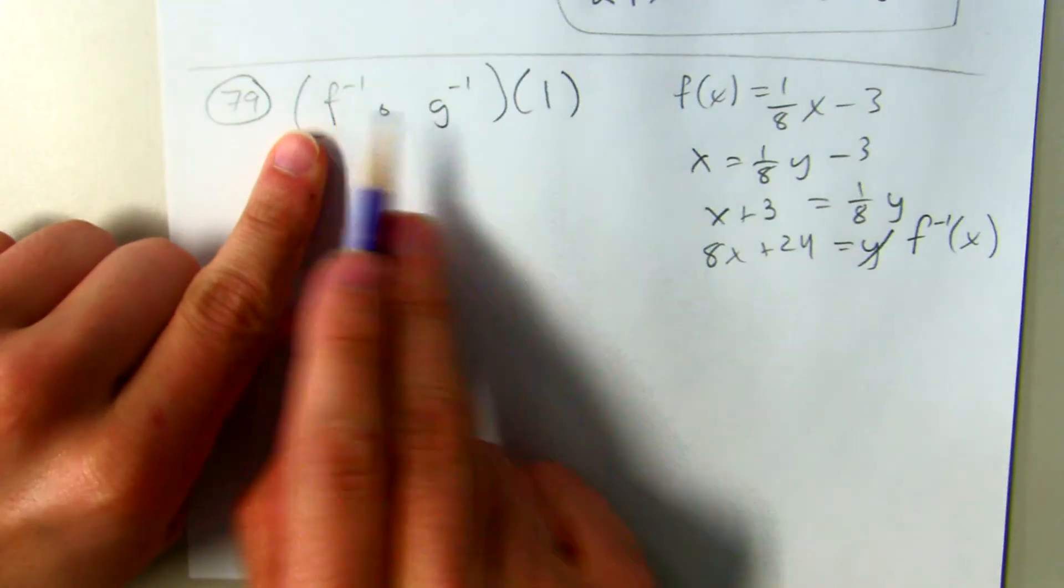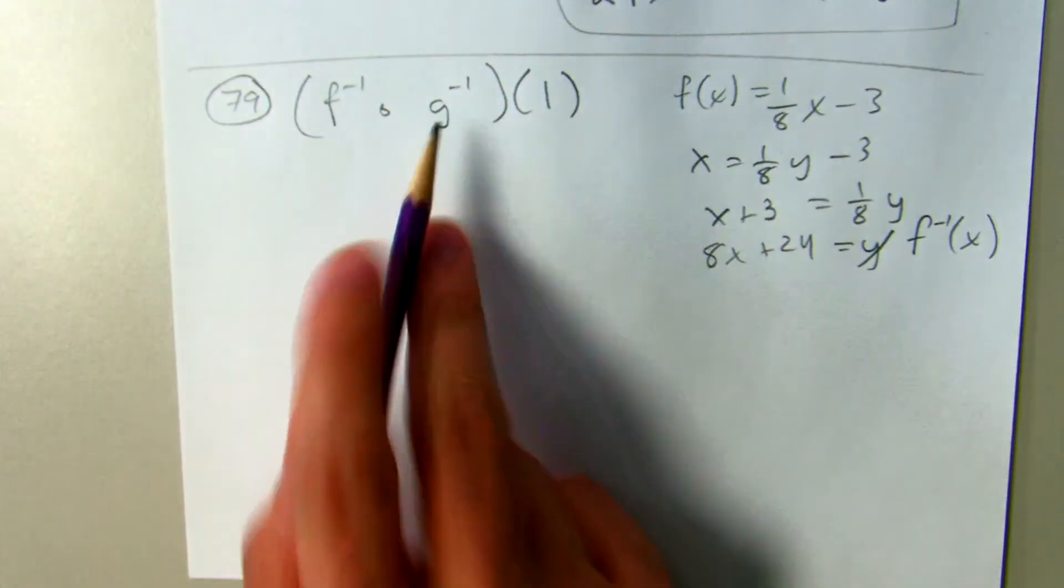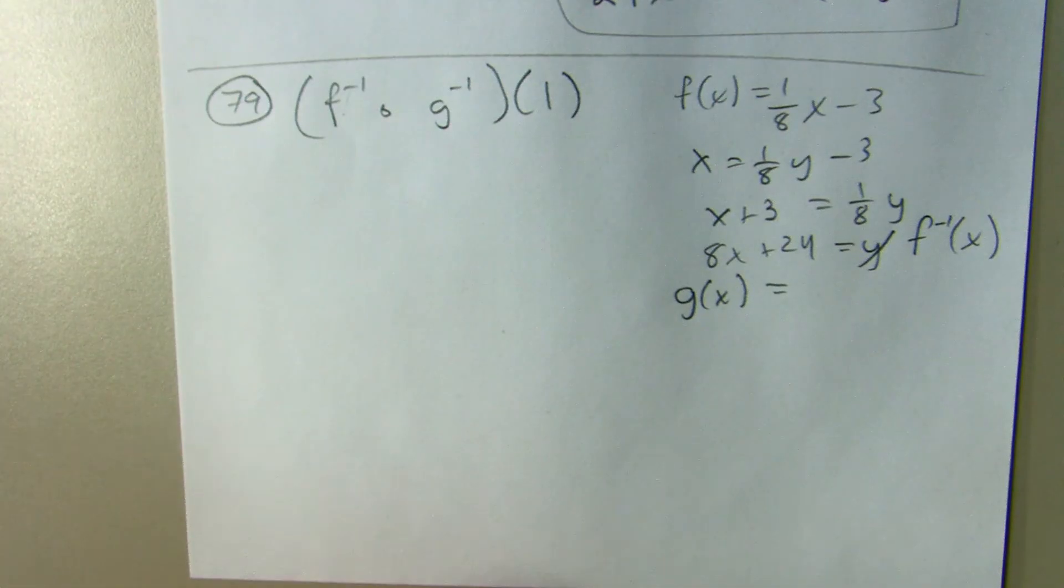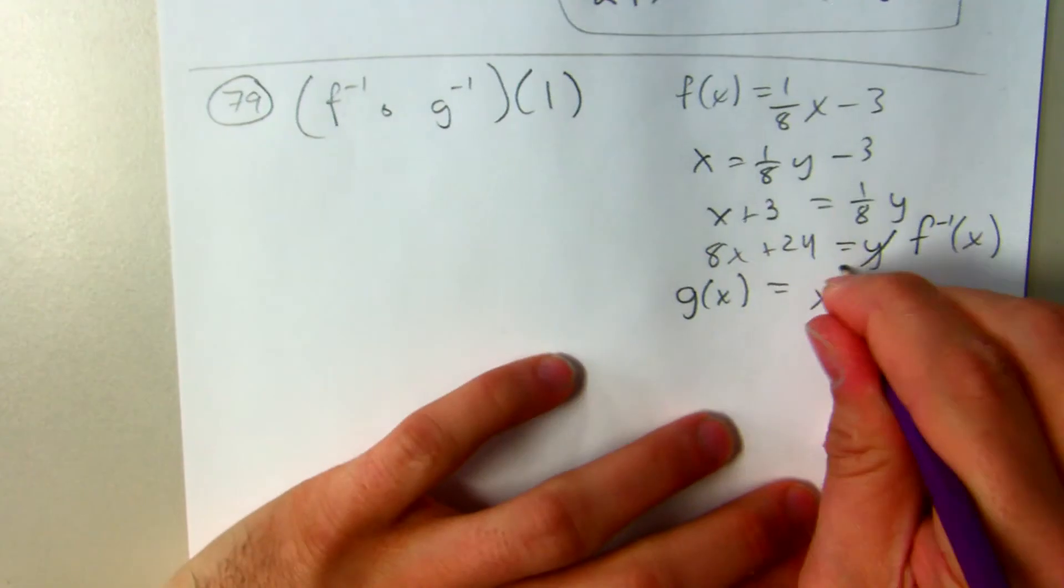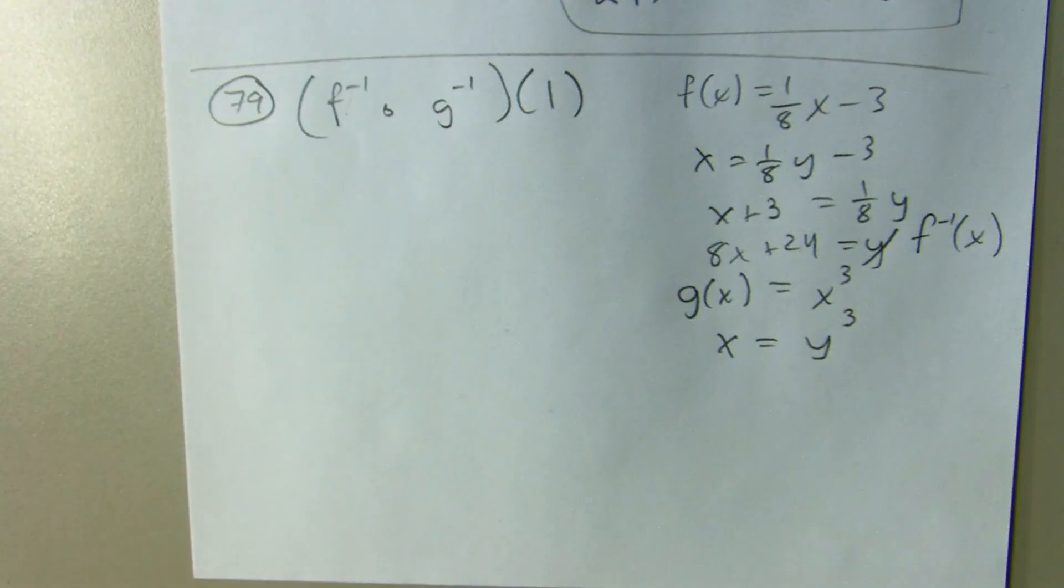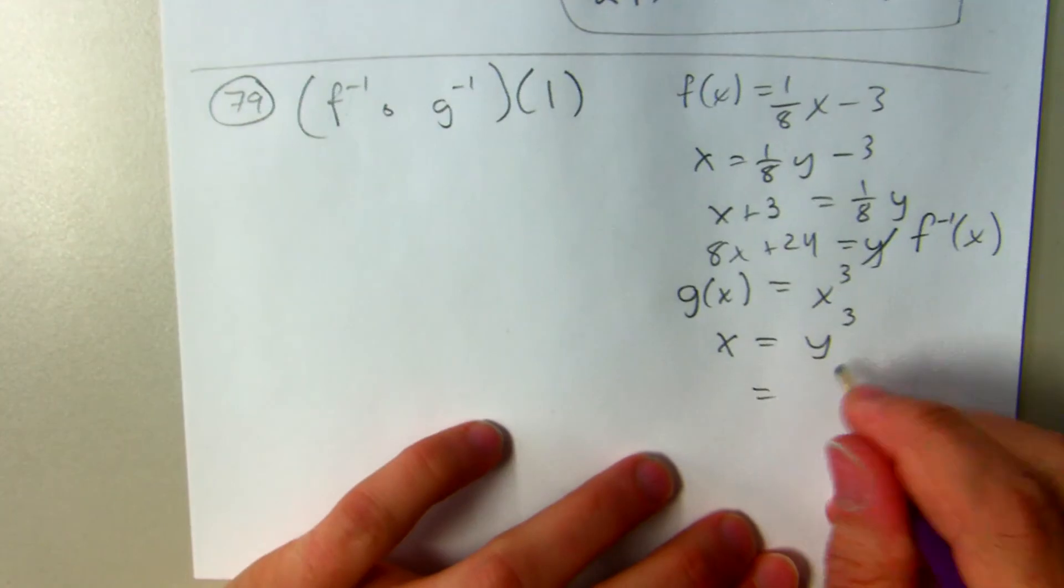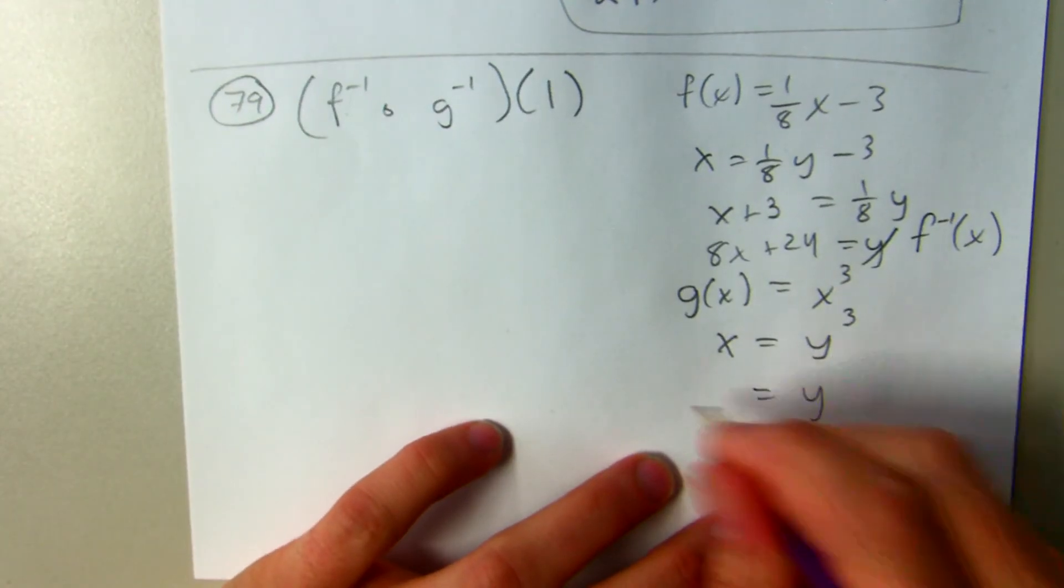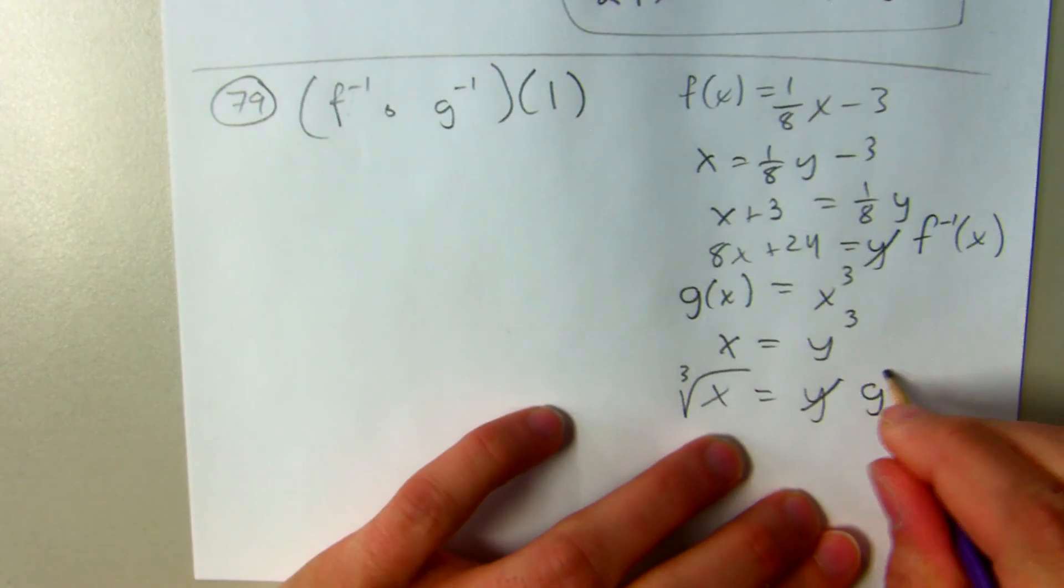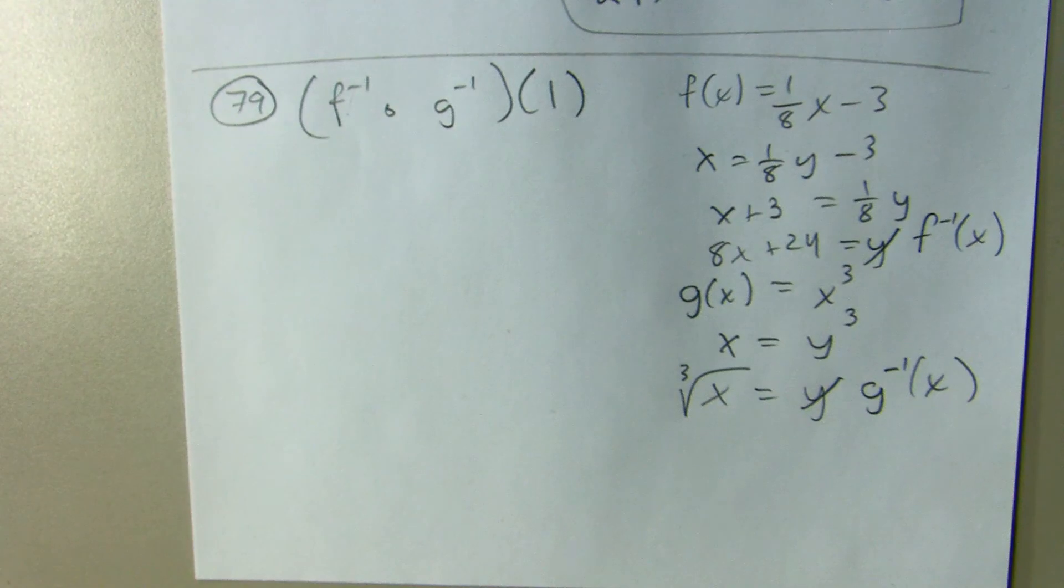Also going to need the inverse of G, so G is X cubed, switching the input and the output. Solving for the output would be cube root on this side, so cube root on this side, and that is the inverse of G.